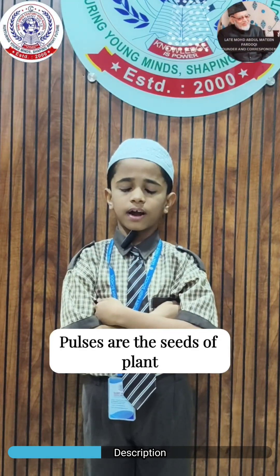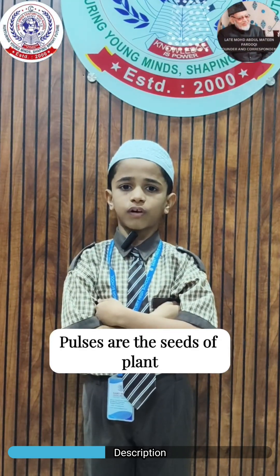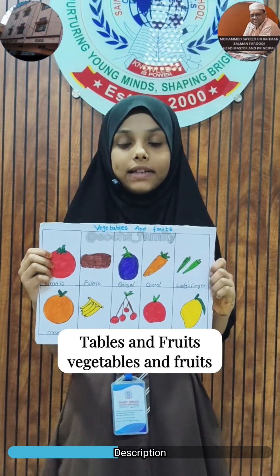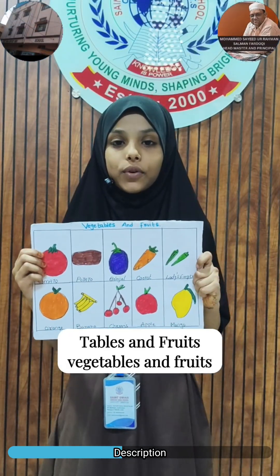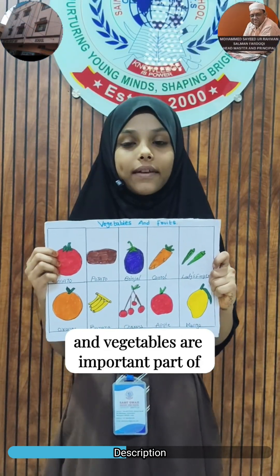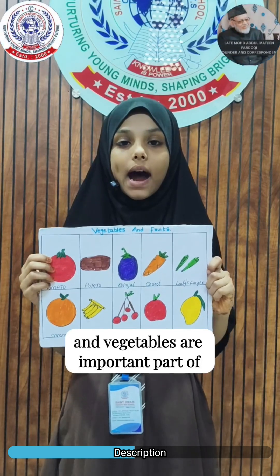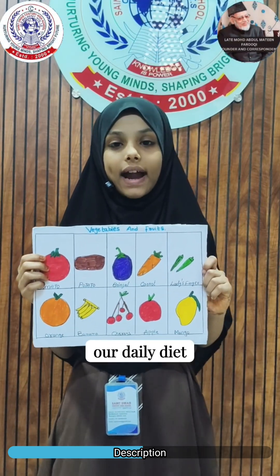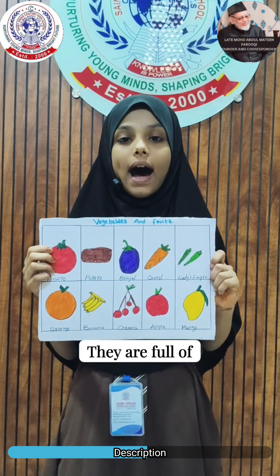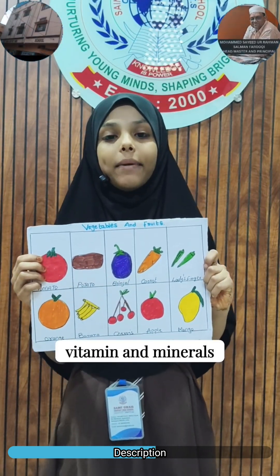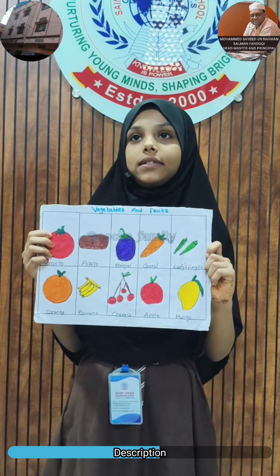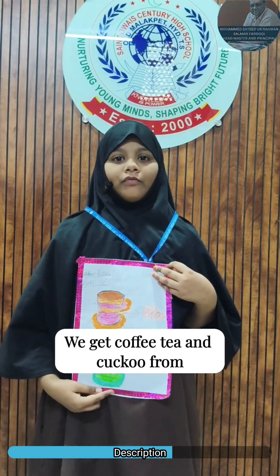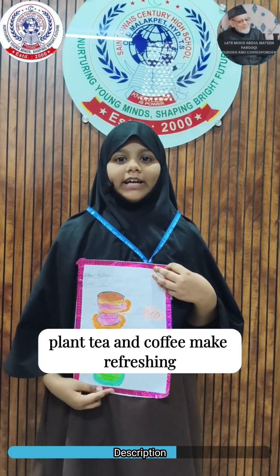Pulses are the seeds of plants. Fruits and vegetables are an important part of our daily diet. They are full of vitamins and minerals. We get coffee, tea, and cocoa from plants.